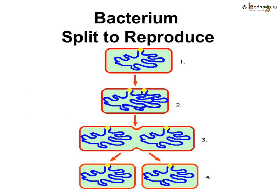You must be wondering, how do bacteria reproduce? Do they lay eggs or directly give birth to young ones like mammals? No. Bacteria are single-celled and they reproduce by splitting themselves into two. Bacteria grow very fast and can double in every half an hour if the conditions are right.